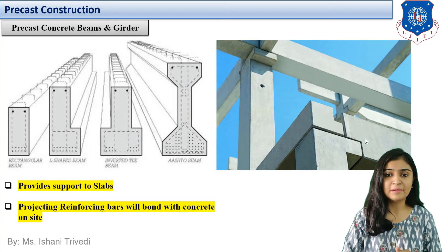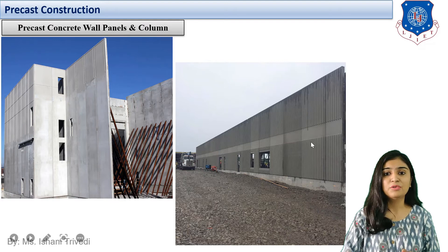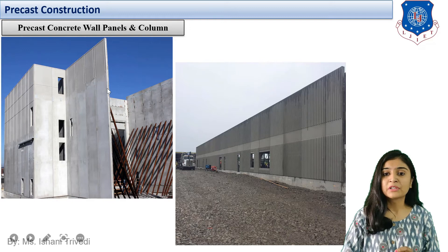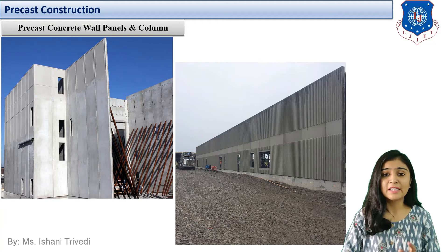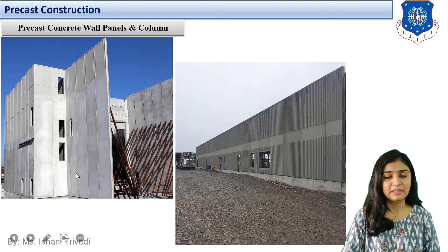Moving forward to the third type: precast concrete wall panels and columns. This is an example of a precast concrete wall panel. The walls are constructed in the form of panels — identical shape and size panels are constructed, making bulk production easier. Openings for doors and windows are left, and the wall panels are placed directly on site.